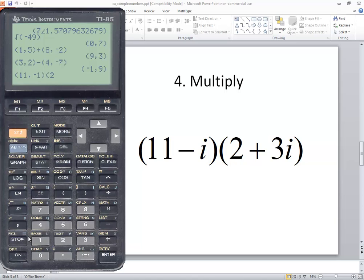Closing parentheses, then beginning parentheses, two, comma, three, closing parentheses. Now I'm assuming on TI-85 if you put two complex numbers together like that it goes ahead and multiplies them. Let's see if that's true. Yes it does. So our answer is 25 plus 31 i.